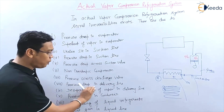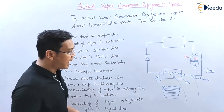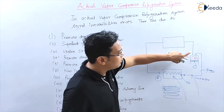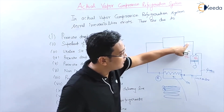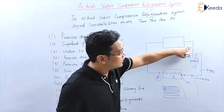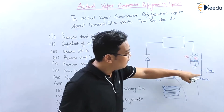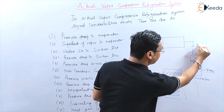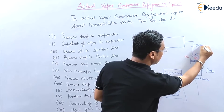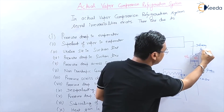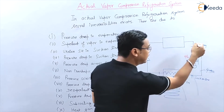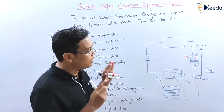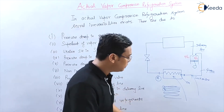Similarly, there is a pressure drop in the delivery line as well. Just as there is friction in the suction line, the delivery line also has friction, which causes a pressure drop in the refrigerant flowing through it.